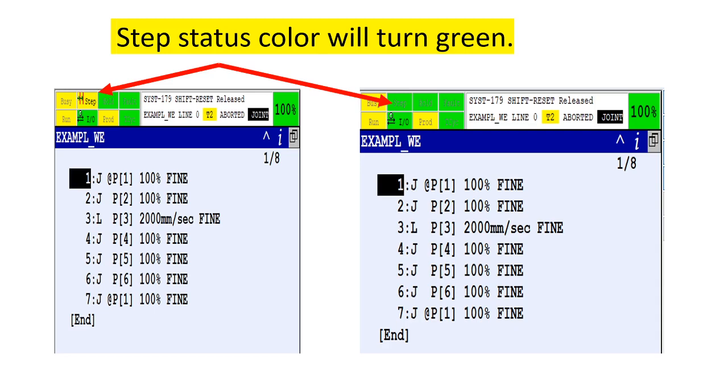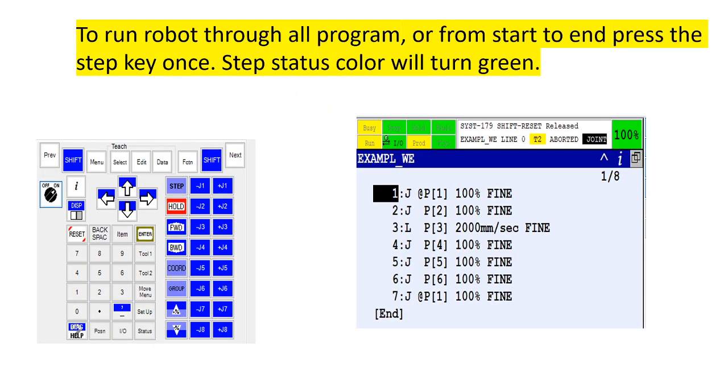Status color will turn to green when enabled. To run robot through all the program, or from start to end, press the step key once. Step status color will turn green.